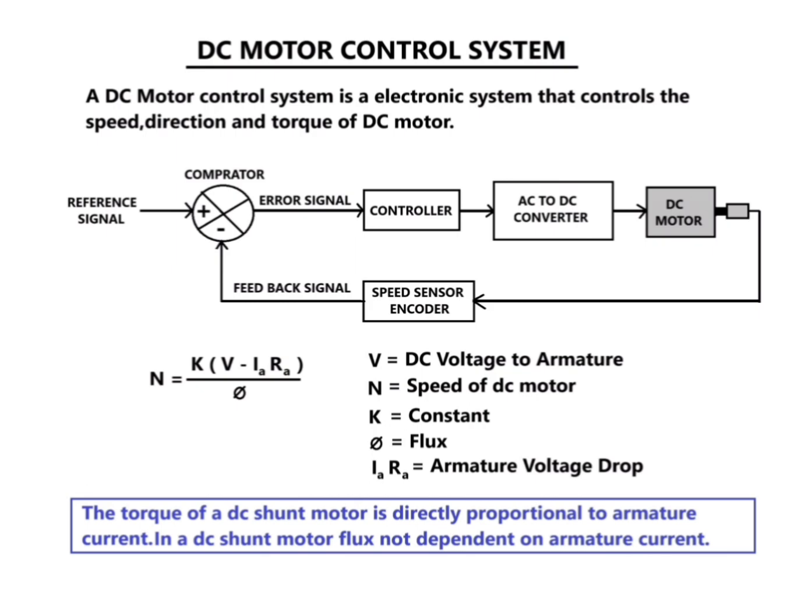The torque of a DC shunt motor is directly proportional to armature current. In a DC shunt motor, the flux is not dependent on armature current, so torque is proportional to armature current.